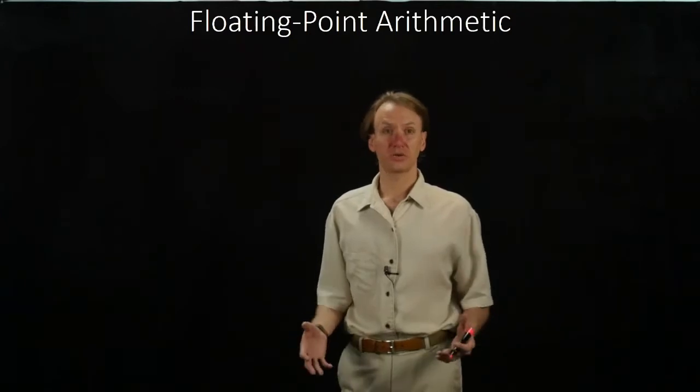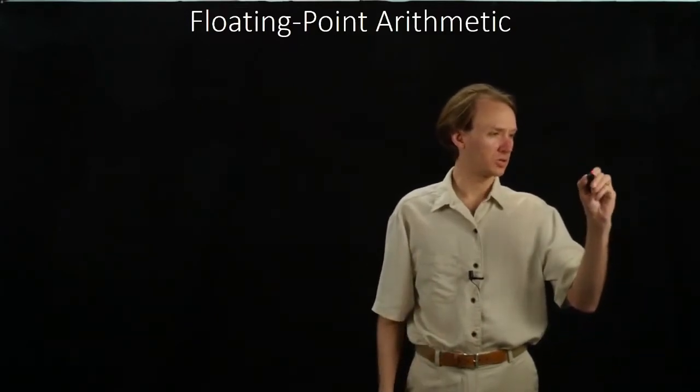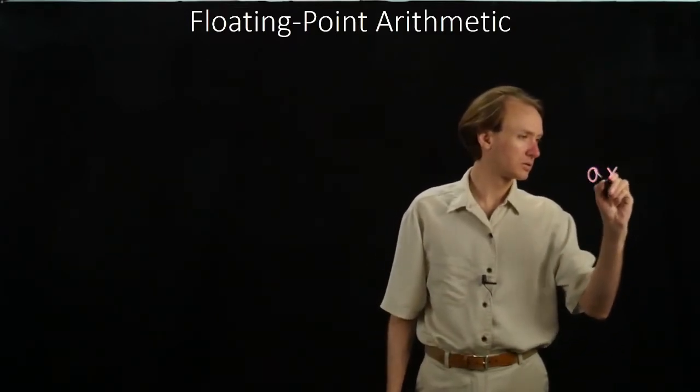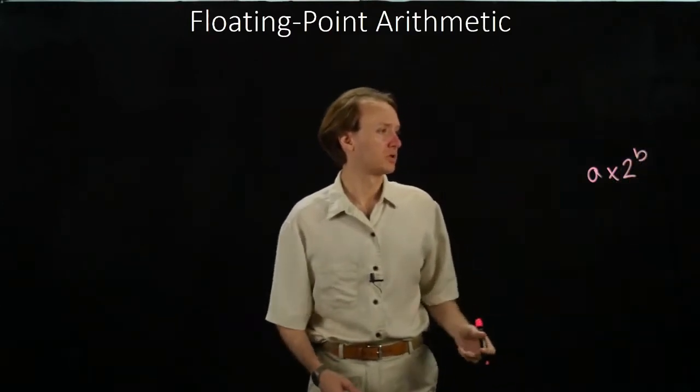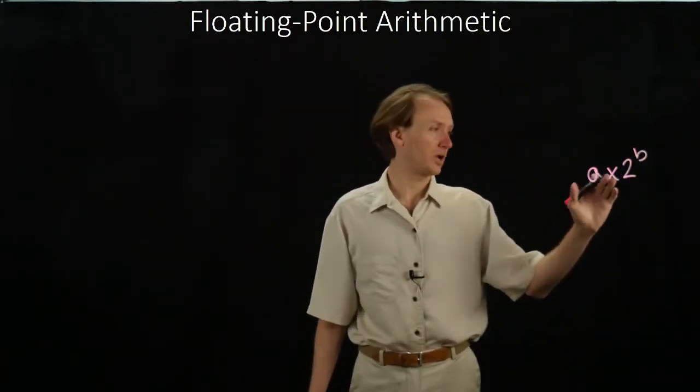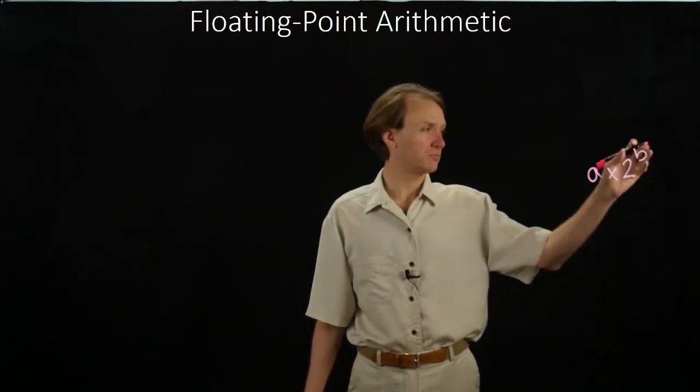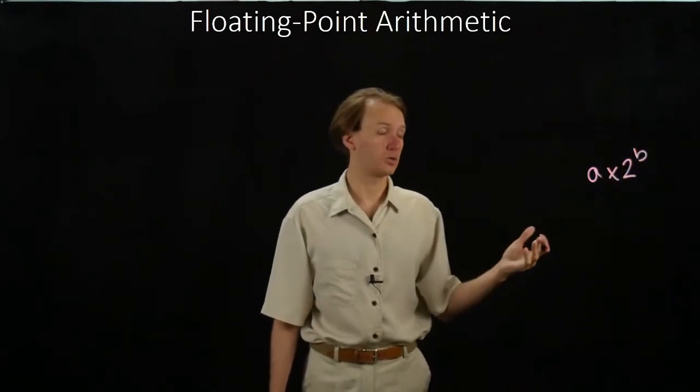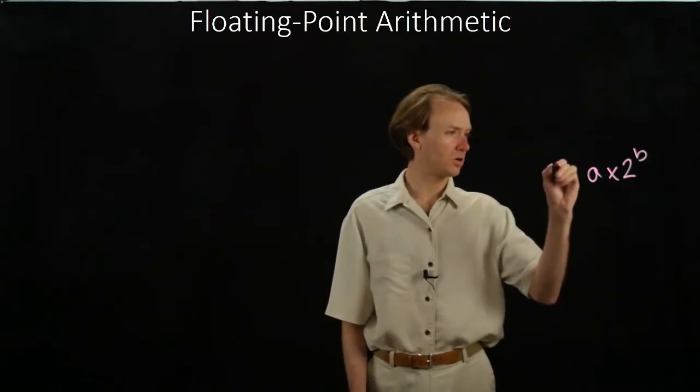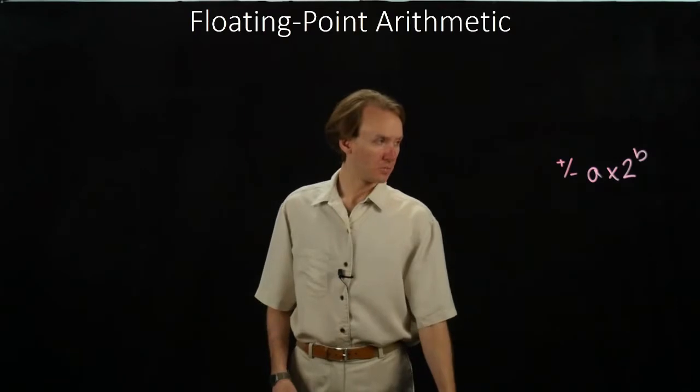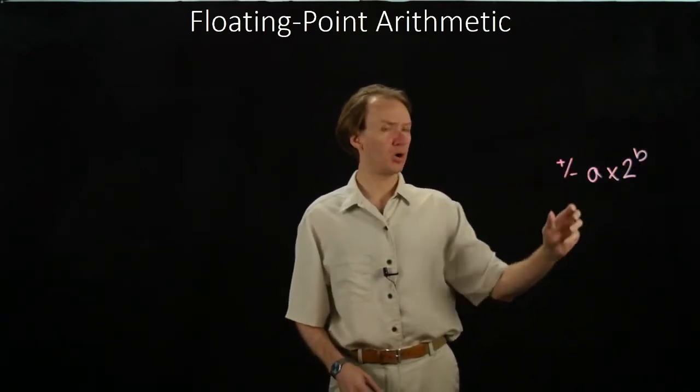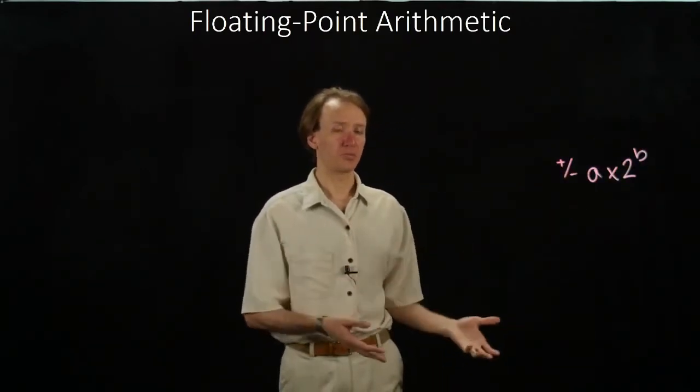We'll begin by considering what our floating-point numbers actually tell us. They have a format that looks like this. We have a significand, we have a base of 2, and some exponent that we also include in the number. Our number can also be positive or negative, but we'll have to worry about each of these parts when we're performing our arithmetic.